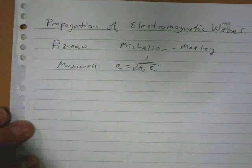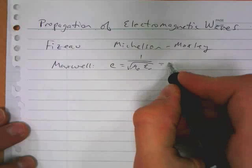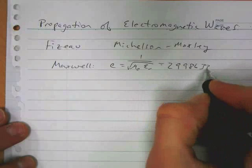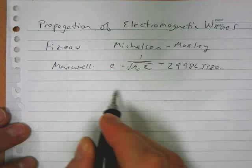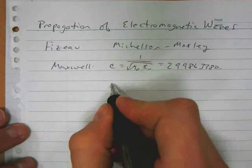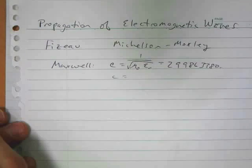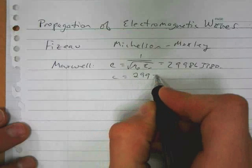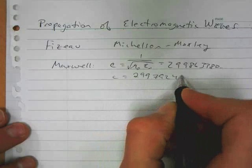If you punch in those numbers, you get 2.99863380 and so on. Whereas the experimental value that has been settled for the speed of light now is 2.99792458, which is the currently accepted value.